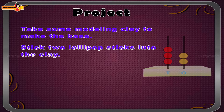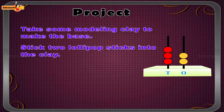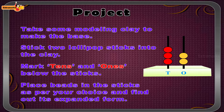Project work: Take some modeling clay to make the base. Stick two lollipop sticks into the clay. Mark tens and ones below the sticks. Place beads on the sticks as per your choice and find out its expanded form.